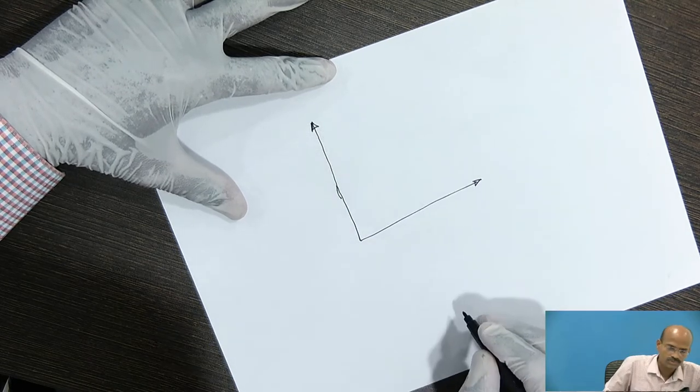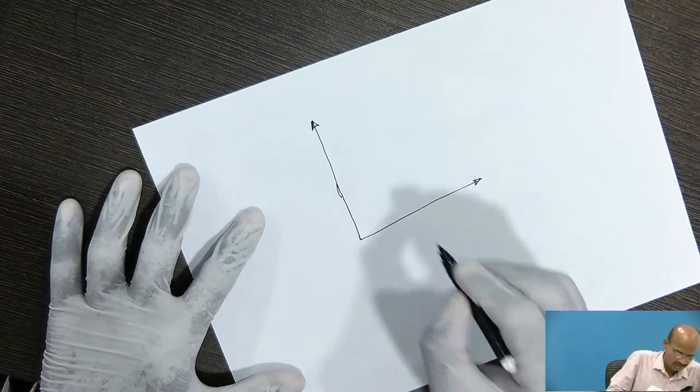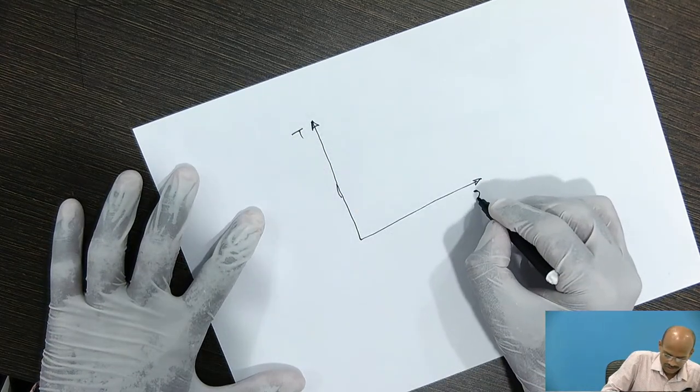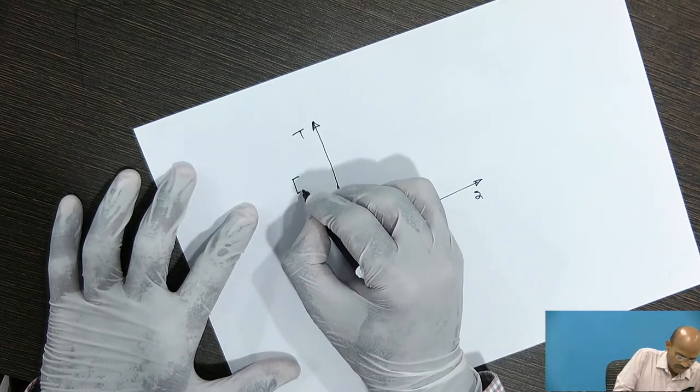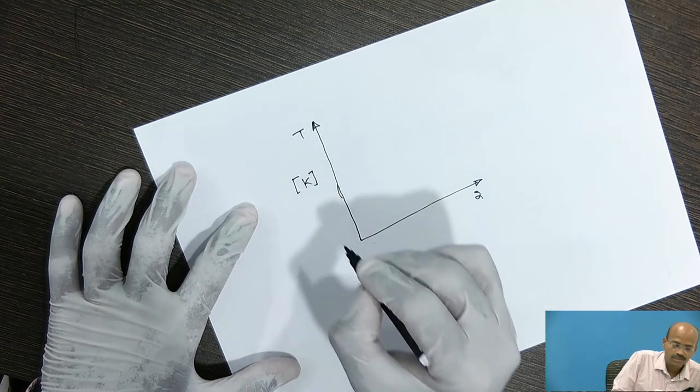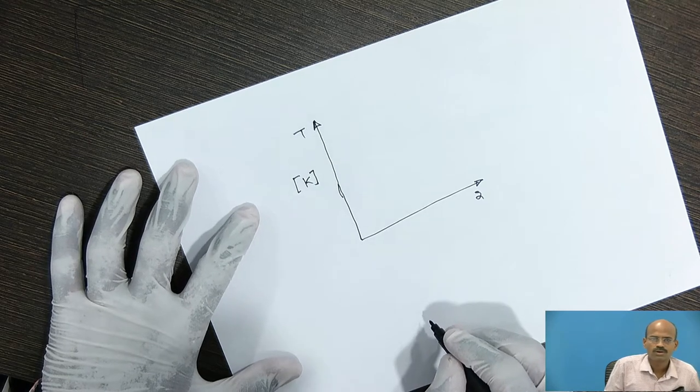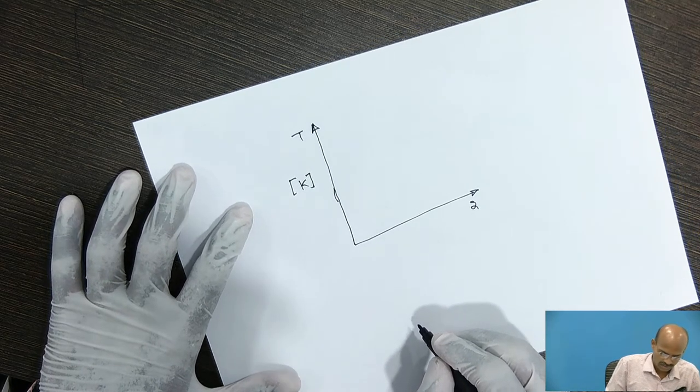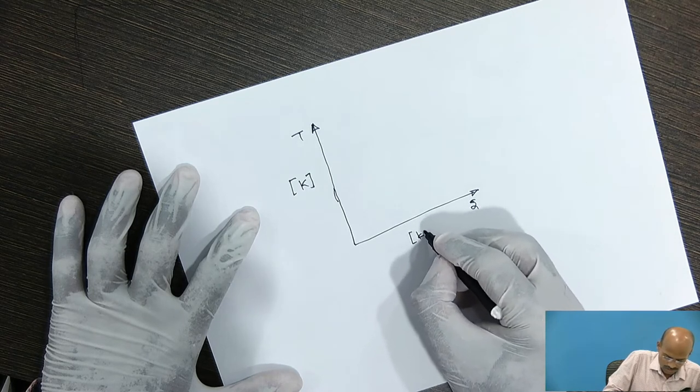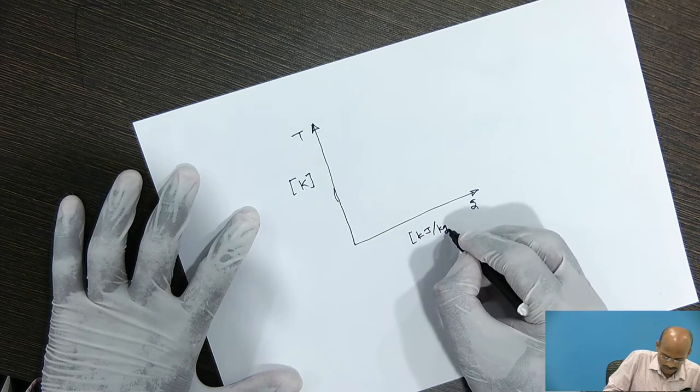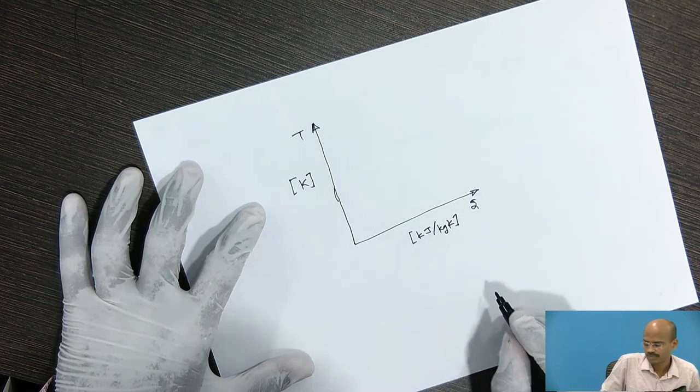The temperature is taken on y-axis and entropy on x-axis. This is the temperature and this is the specific entropy. The unit of the temperature can be taken in either degree Celsius or in Kelvin, whereas the entropy unit is kilo joule per kilogram Kelvin.